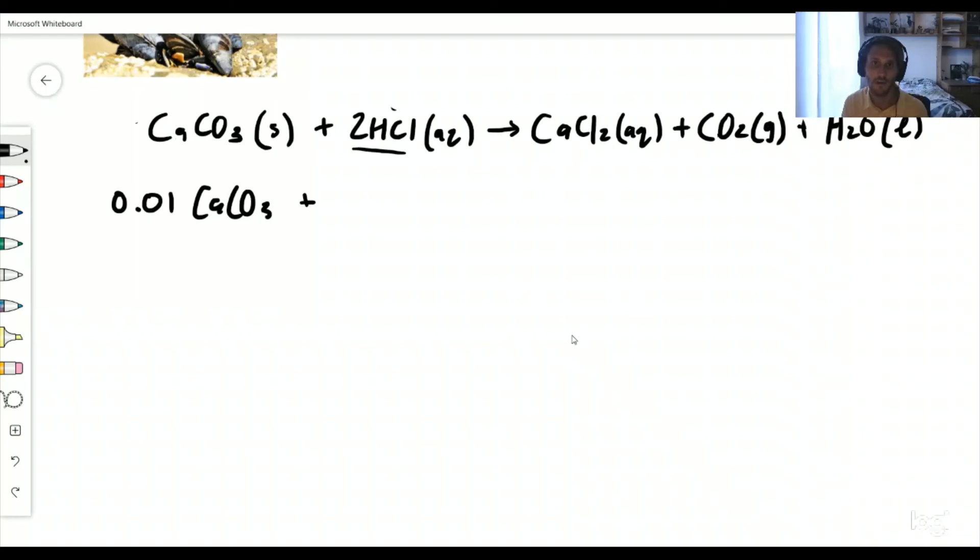Remember, it said that hydrochloric acid is in excess. So we've got so much of this stuff, we don't even need to know how many moles it is, because we're only going to be working with 0.01 calcium. That's going to run out and that's the end of the reaction. But remember the mole ratios: one mole of this, two moles of this, gives me one mole of this, one mole of this, and one mole of this. It means if I use 0.01 moles of calcium carbonate, I'm going to create 0.01 moles of CaCl2, calcium chloride, 0.01 moles of CO2, which is exactly what we're looking for, and 0.01 moles of H2O.